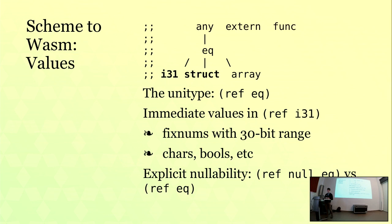Structs and arrays are abstract types with concrete types for their fields. In Scheme, we're going to use ref eq — a reference to the eq type — as our common value representation. We'll represent immediate values using i31s; some of that space will be for fixed-point numbers and some for values like true, false, and characters, since Scheme differentiates between characters and strings. In WebAssembly, value types are not nullable by default — you have to explicitly mark types as nullable. In Scheme we don't need null, so we'll do without it, making our compilation more efficient.